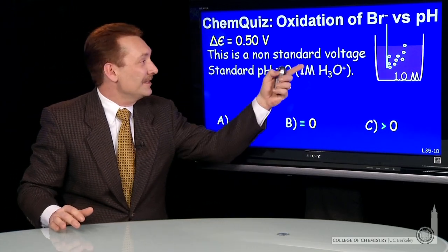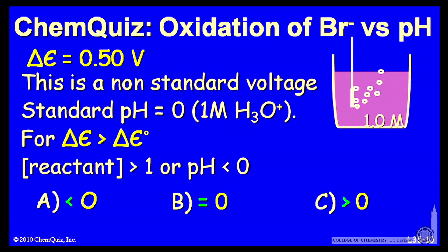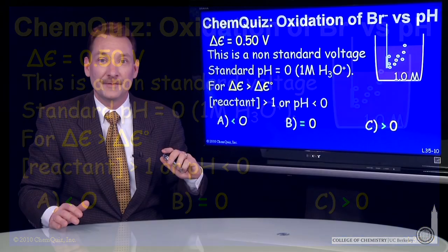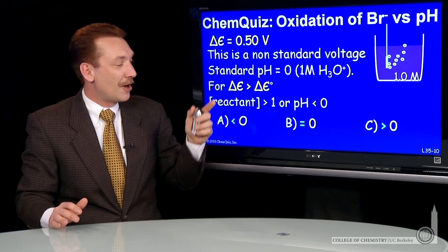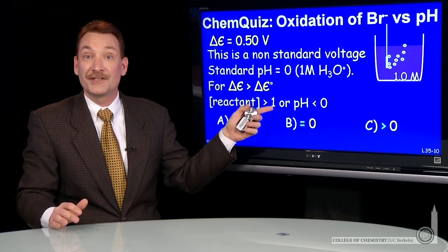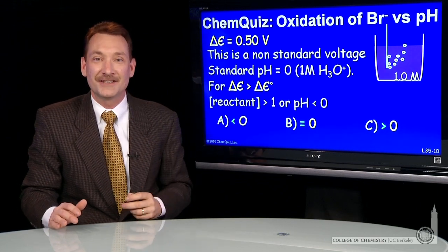We have a nonstandard voltage that's higher than the standard voltage. So if we raise the reactant concentrations above the standard state concentrations, which are 1, then that would cause a pH of less than 0. So the conditions where we can operate this cell at half a volt are reactant concentrations above their standard state 1 molar, which corresponds to a pH of less than 0.